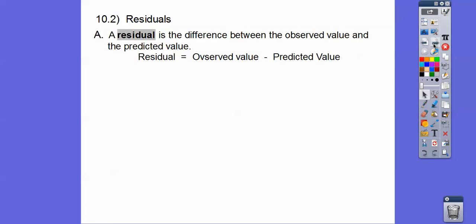This lesson is called Residuals. Residuals talks about our line — how strong our line is — our linear regression line, or a trend line as this book calls it, or the least square regression line, or the best fitted line, depending on what your book calls it.